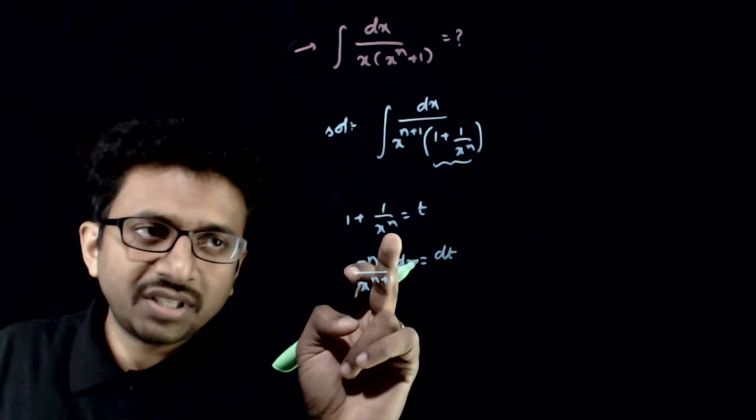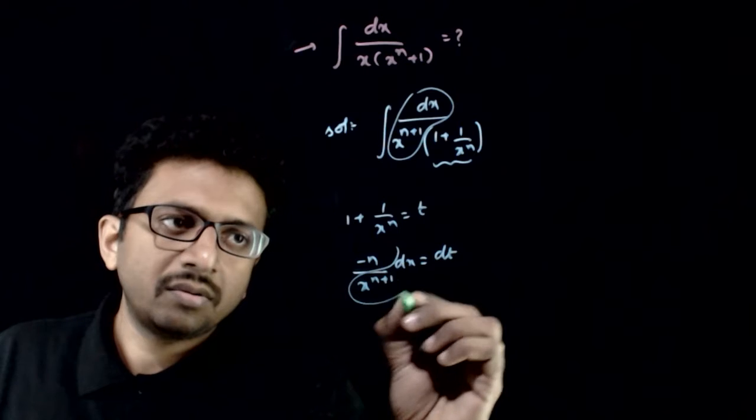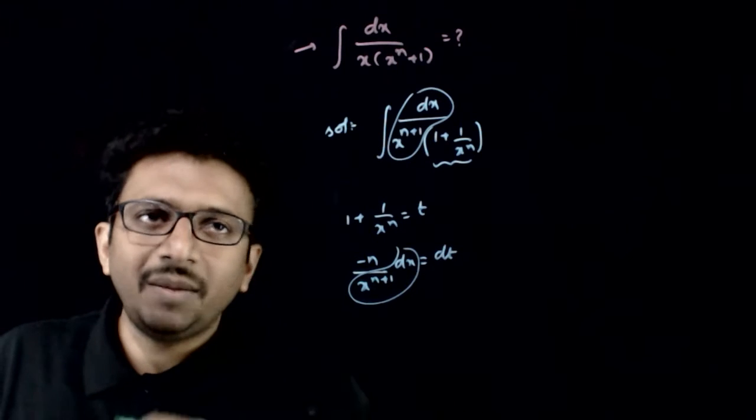The differentiation of this is minus n by x power n plus 1, so dx by x power n plus 1 will be equal to minus dt by n.